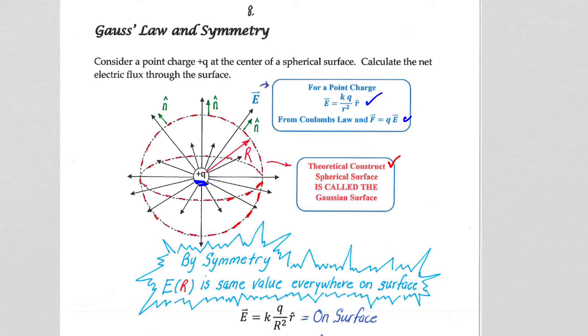After we finish our flux calculation here and formally get the language for Gauss's law in place, we're going to refer to that sphere, that theoretical construct sphere, as a Gaussian sphere. And that Gaussian sphere will have the Gaussian surface.